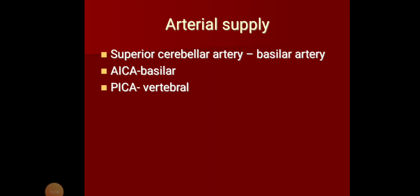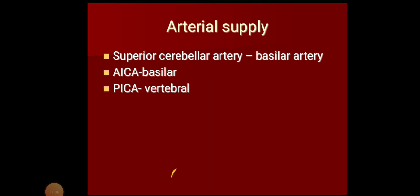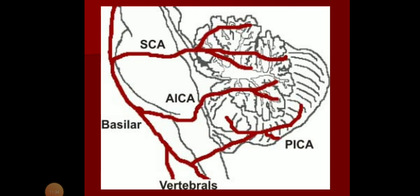Now we come to the arterial supply. The cerebellum is mainly supplied by three arteries: the superior cerebellar artery, the anterior inferior cerebellar artery, and the posterior inferior cerebellar artery. The first two — superior cerebellar artery and anterior inferior cerebellar artery — are branches of the basilar artery. PICA, the posterior inferior cerebellar artery, is a branch from the vertebral artery.